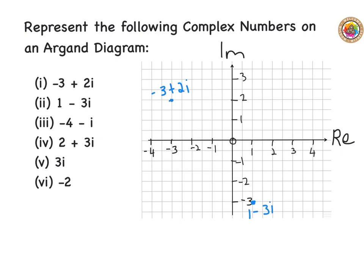The next one we're asked is minus four minus i. I go to minus four on the real number line and down to minus i — I know that's the same as minus one i — so I go down to minus one. I plot that there, and that's minus four minus i.